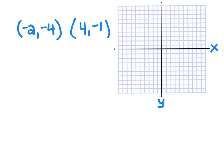A type of problem you'll see is graphing a couple of points, so here's a quick refresher. This is an x-coordinate and this is a y-coordinate. For the first point, I go over negative two on the x-axis and then down four, placing a point there. For the other, I go over four and then down one. I'll connect those two points — and now I want to know how long that diagonal line segment is. It's hard to do without a ruler, but there's another way using the Pythagorean theorem.